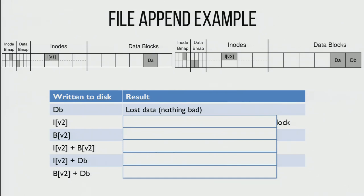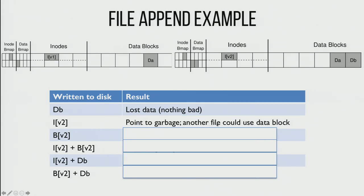And because we didn't mark that data block as allocated in the bitmap, some other file's append is going to get that data block, set their inode to use it, and point to it too. So not only are we pointing to garbage, but some future file will also use this data block — we'll be able to see in our file any secret data they were hoping to write. This is a pretty bad privacy leak. Two problems: we point to garbage, and another file could use this data block and we'll both point to it.